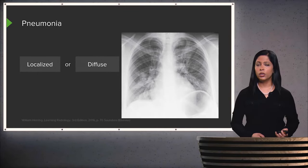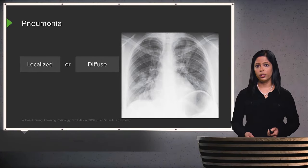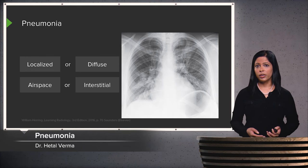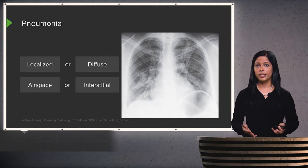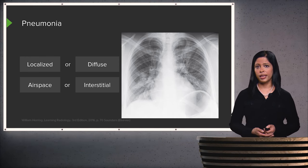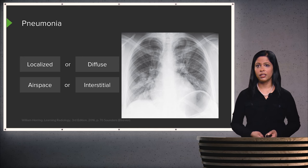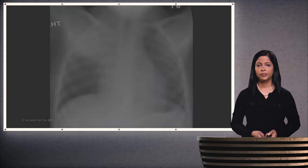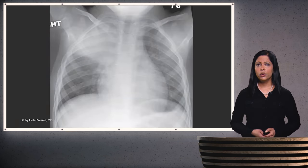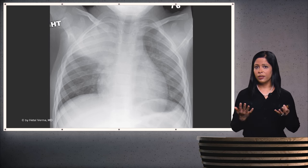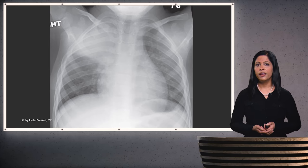Pneumonia can be either localized or diffuse, and either airspace or interstitial. There are a variety of ways pneumonia can present, and it is one of the most common causes of consolidation. These patterns are important to keep in mind because they come up relatively often and help identify what the consolidation represents.